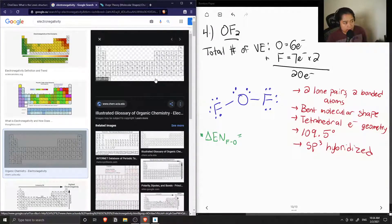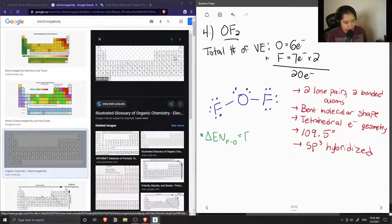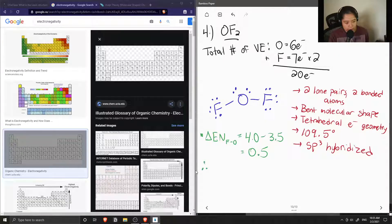Using this periodic table that shows all the electronegativity values, we can see that fluorine has an electronegativity value of 4 and oxygen has an electronegativity value of 3.5. The difference between the two is 0.5, so therefore the fluorine-oxygen bond is polar. We know that because the difference in electronegativity is greater than 0.4 but less than 1.69.